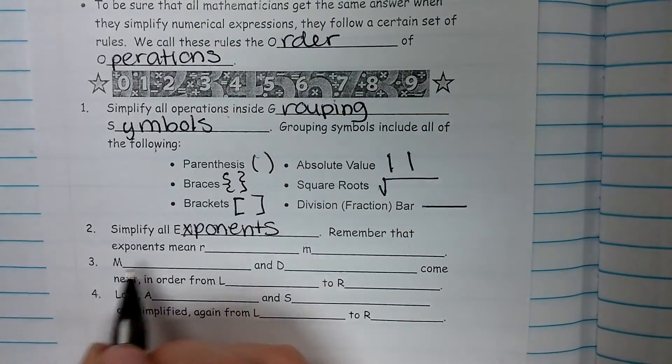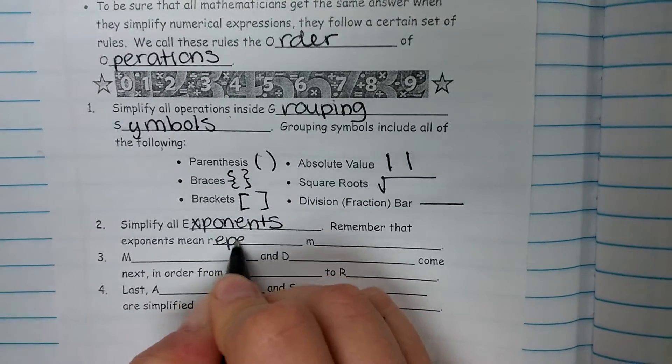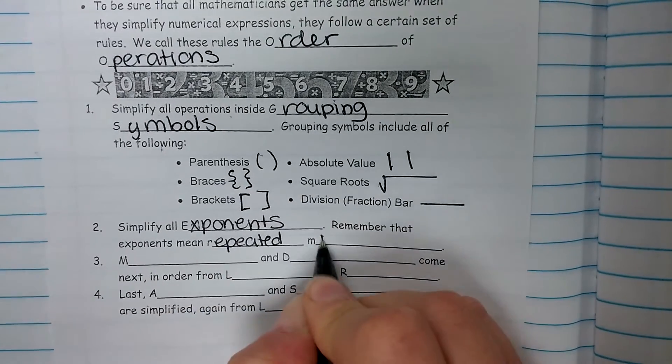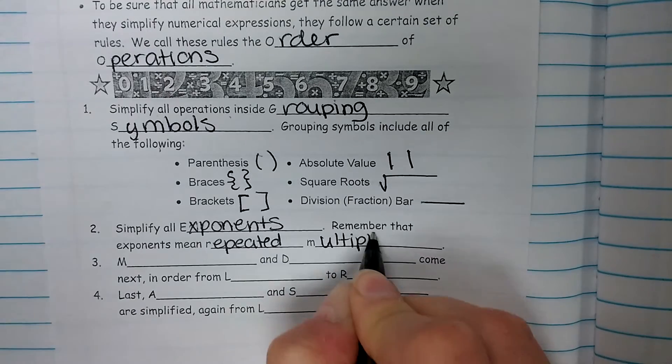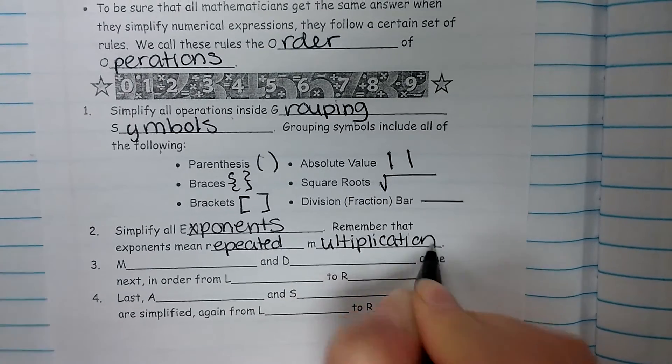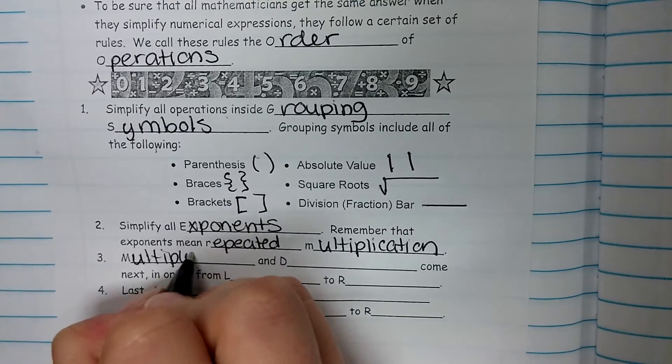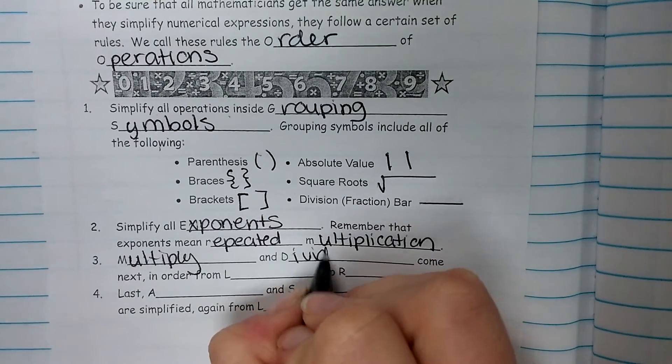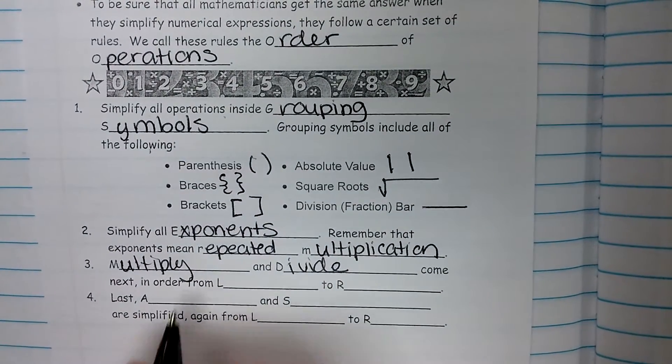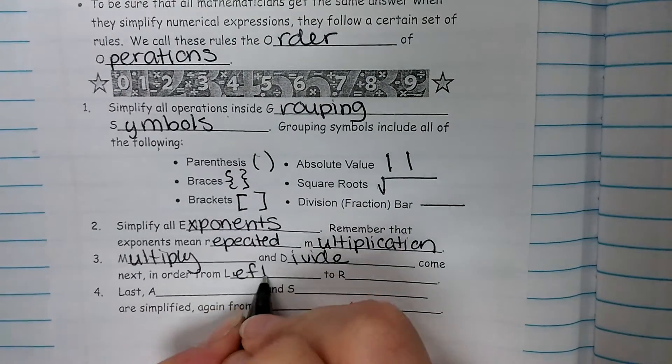Remember that exponents mean repeated multiplication. Step three is to multiply and divide. They come next, and they're in order from left to right.